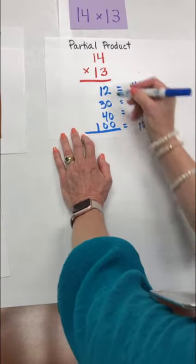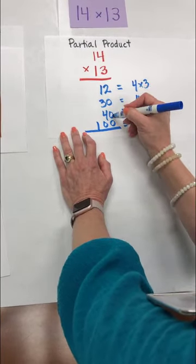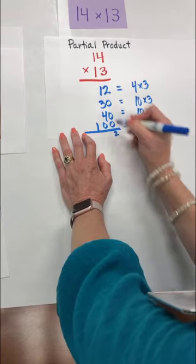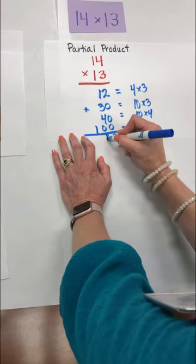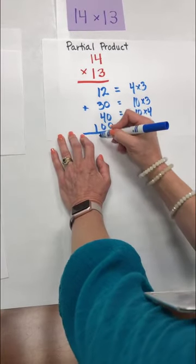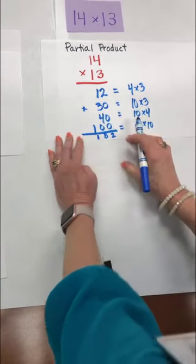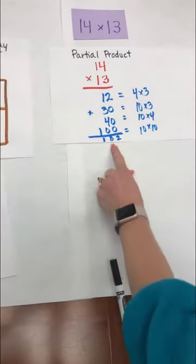And when we add that up we have 2 plus 0 plus 0 plus 0 is 2. 10 plus 30 plus 40 gives us our 80 or 8 tens. And then our 100 and our product is 182.